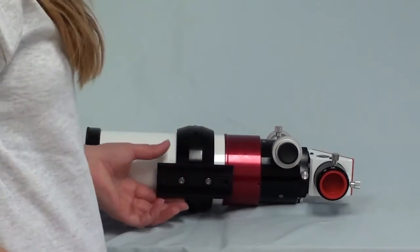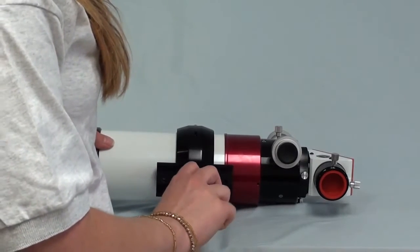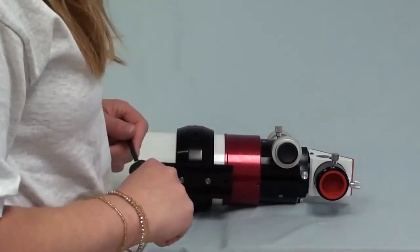Once it's attached, you'll want to make sure it's nice and secure. You might want to give it an extra quarter turn just to ensure that it won't become loosened when you're actually putting it on your mount.